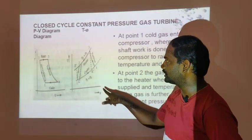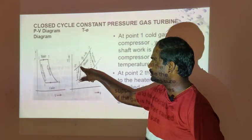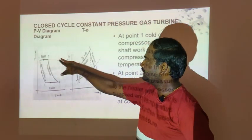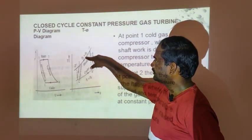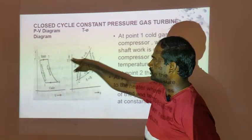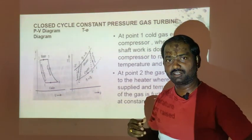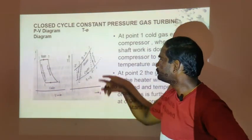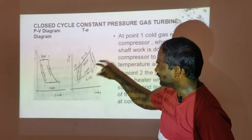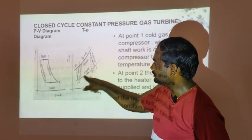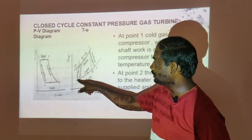Similarly, on the T-S (Temperature-Entropy) diagram: compression raises temperature from T1 to T2. Heating raises temperature further from T2 to T3 at constant pressure. Turbine expansion drops temperature, and finally cooling in the cooler restores the gas to its initial state.